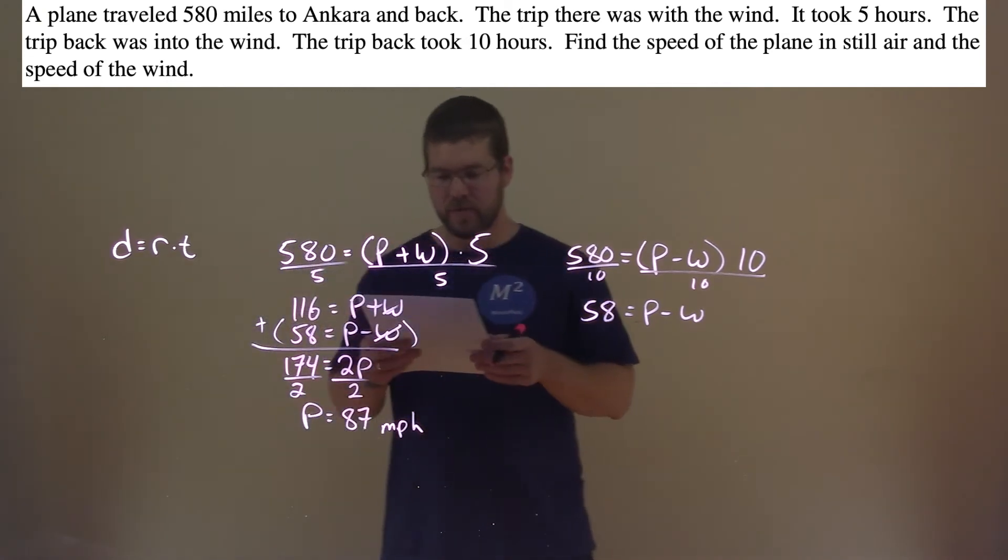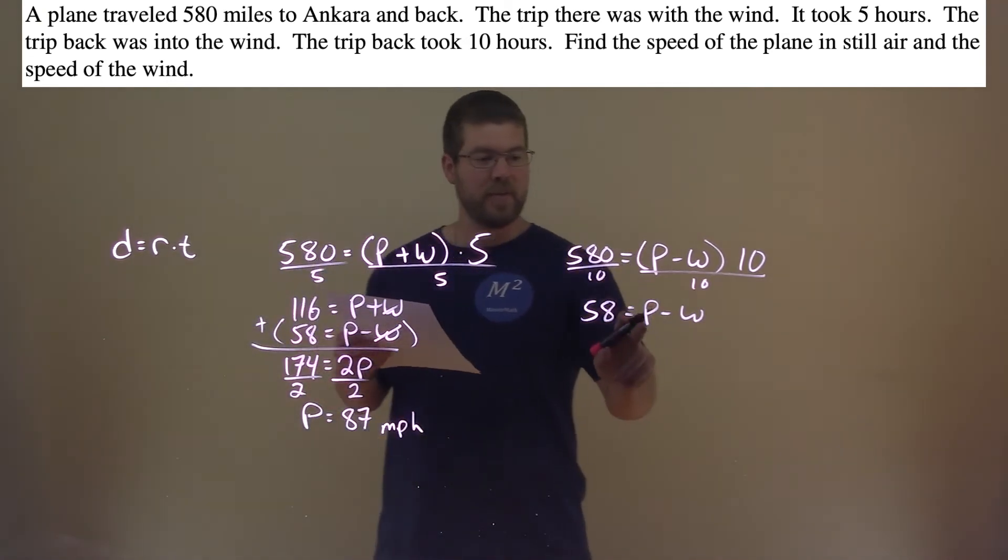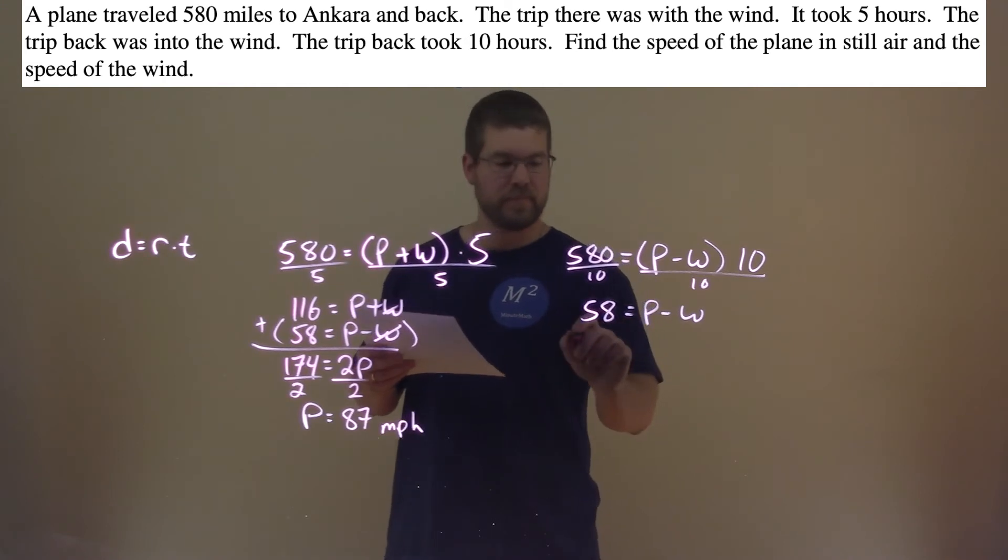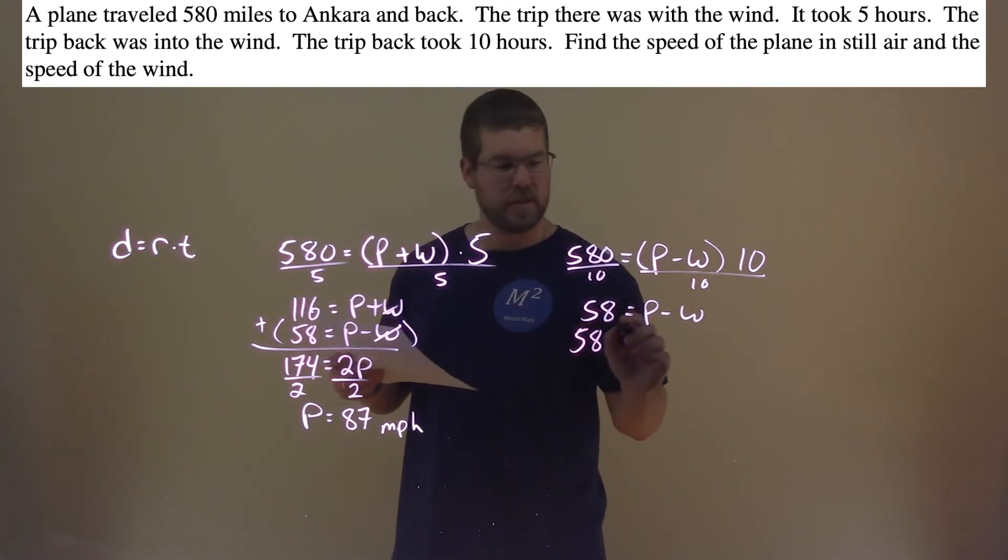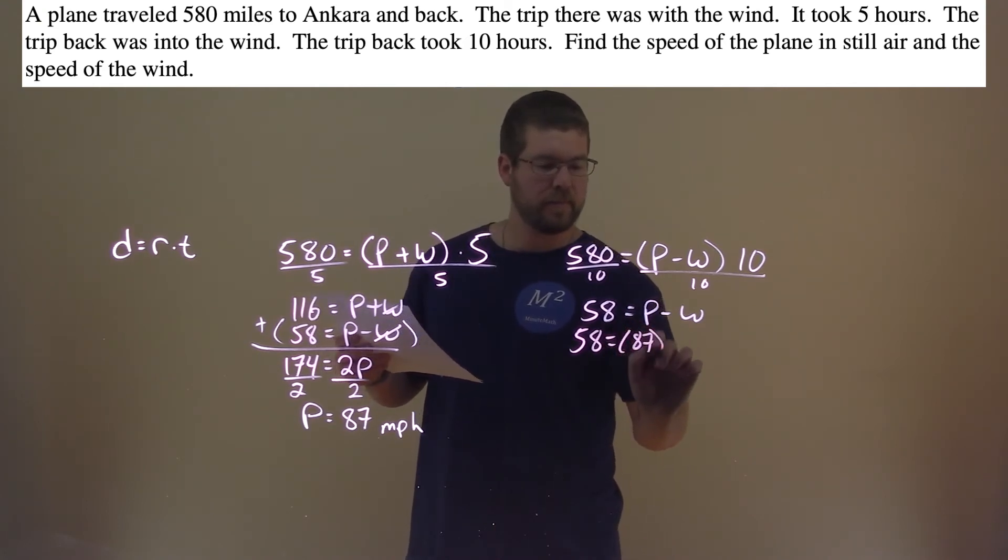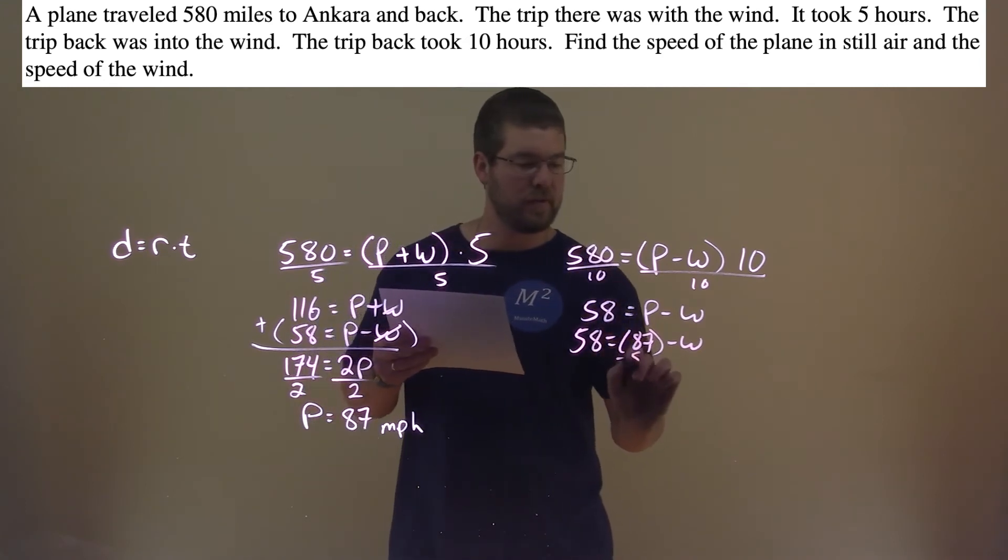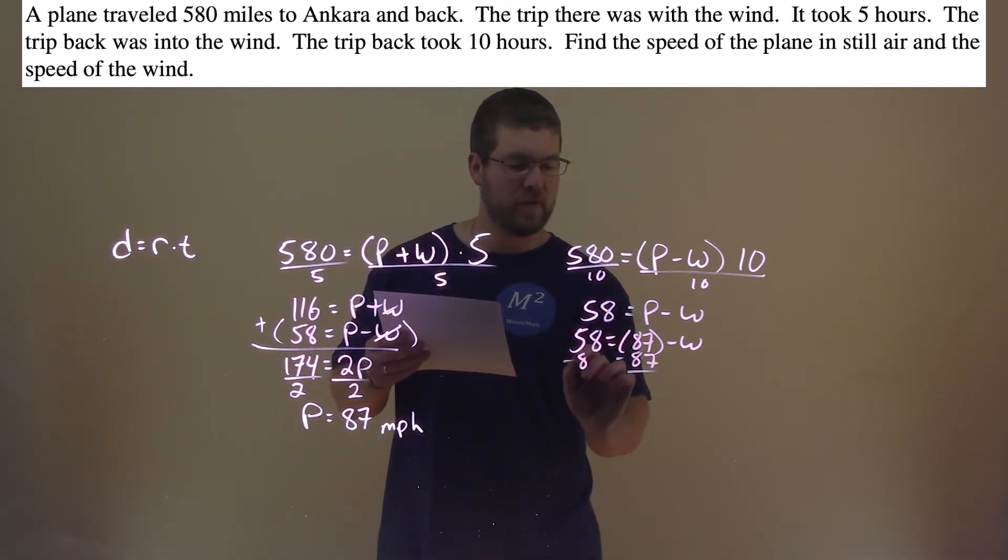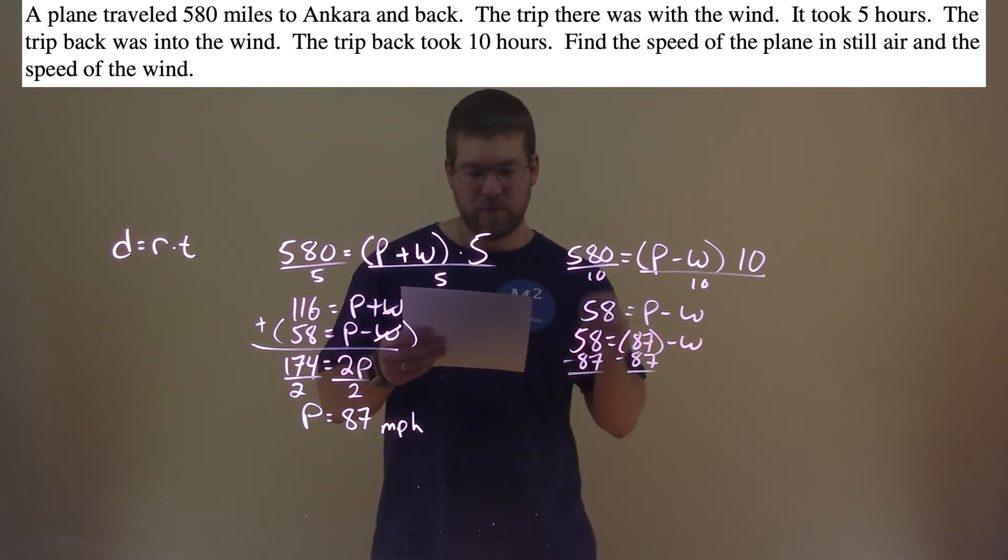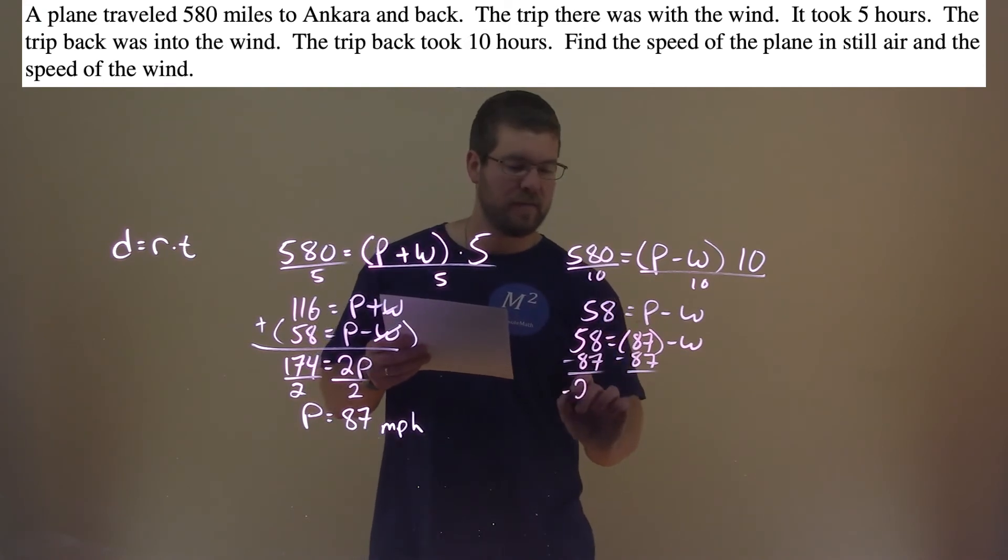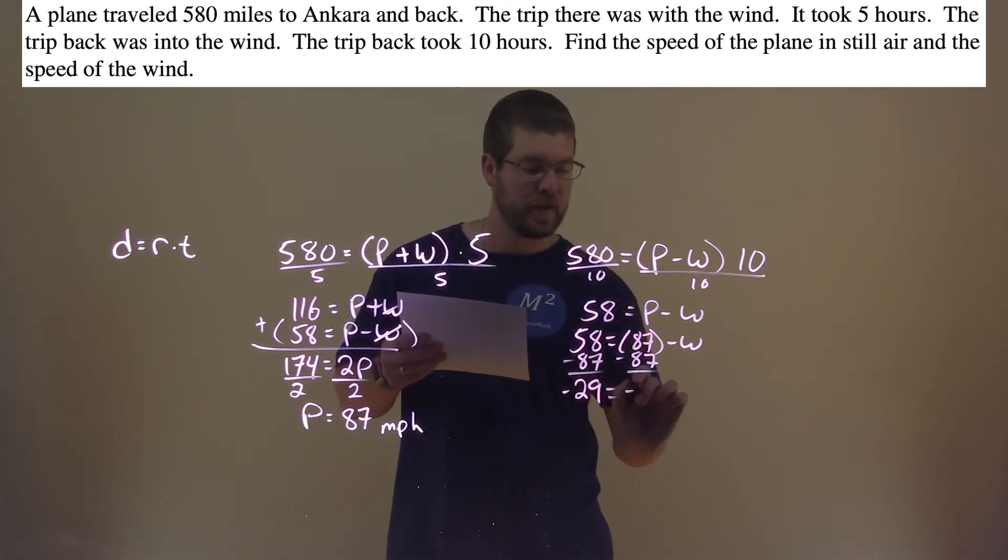We then can take that information, and we're going to plug it in for this P value to solve for W. And we can pick any of the original equations, but I'm choosing this. P is 87 minus W. I subtract 87 to both sides, follow my standard rules here, and 58 minus 87 is negative 29 equals negative W.